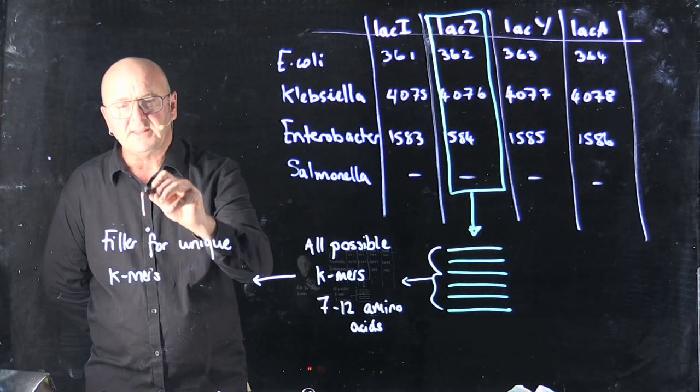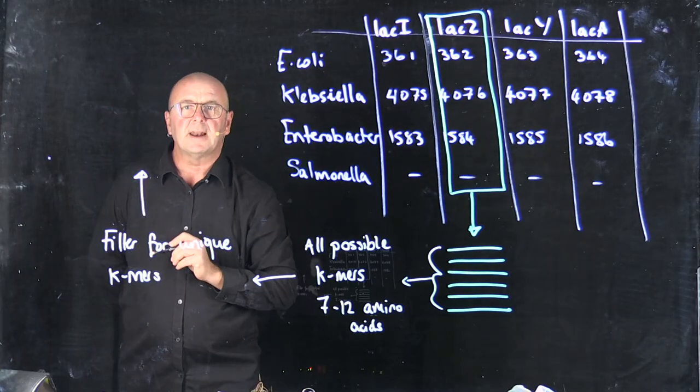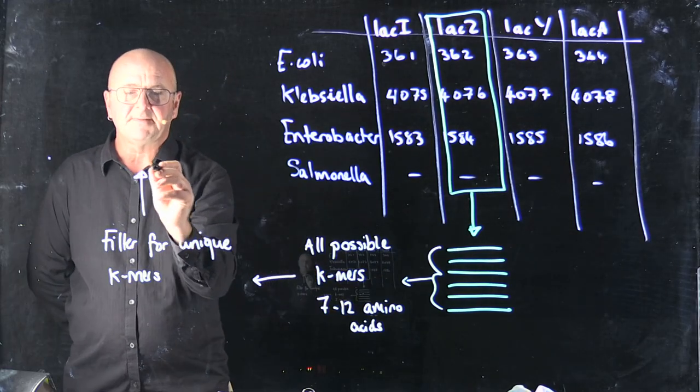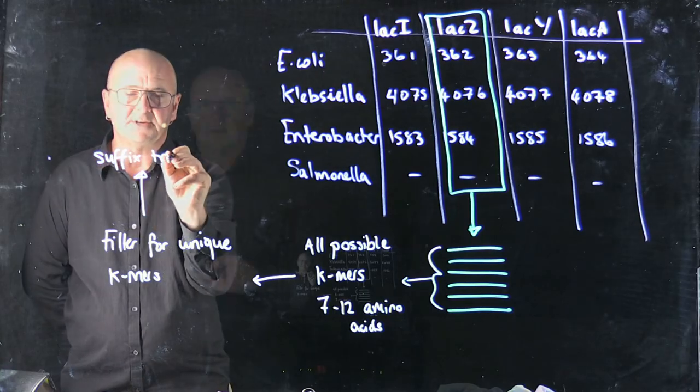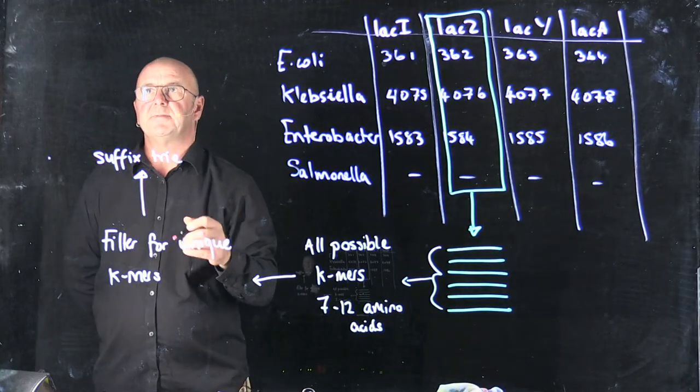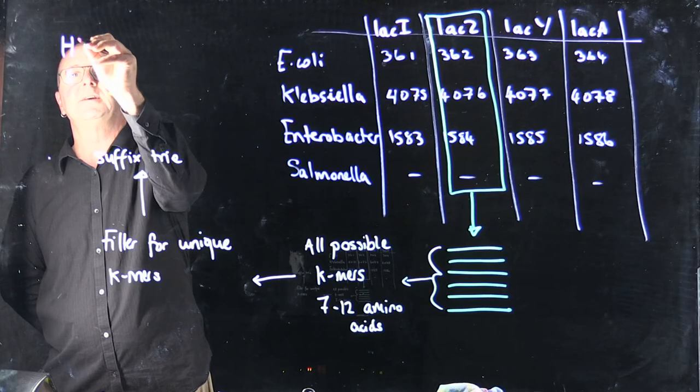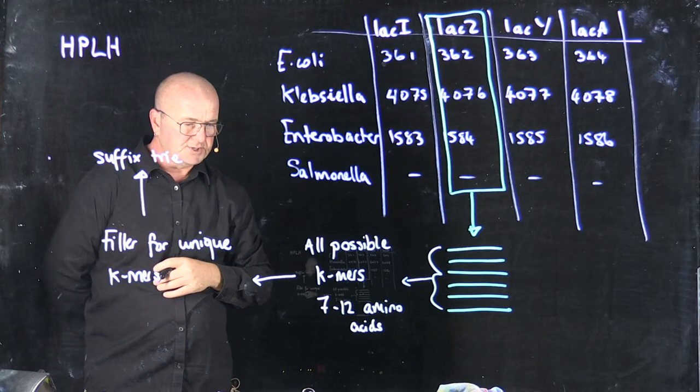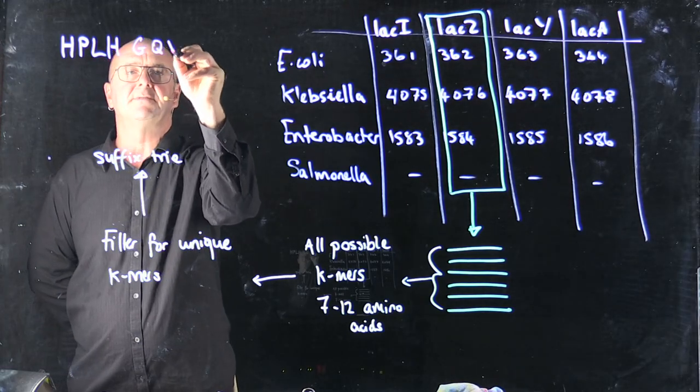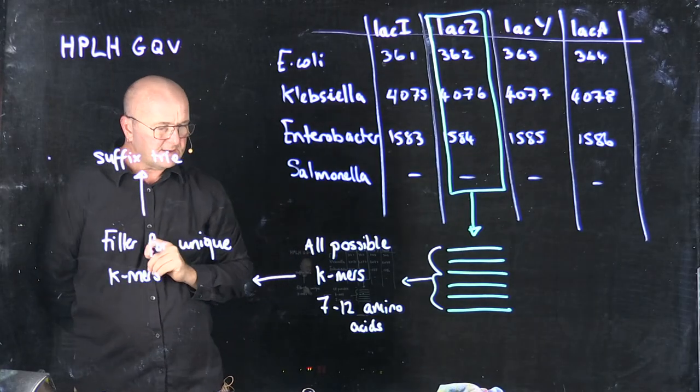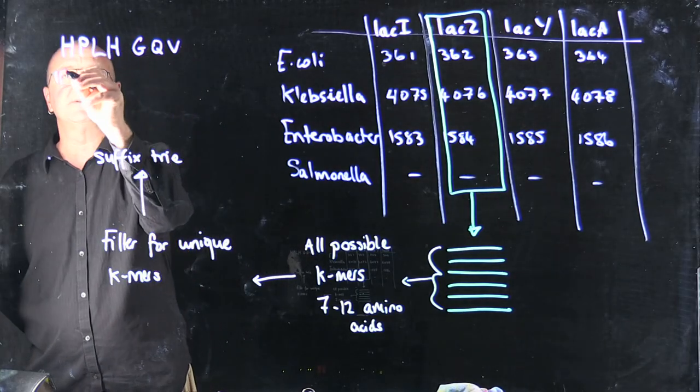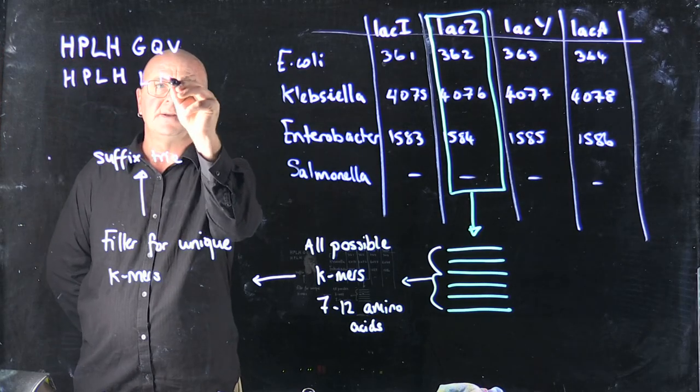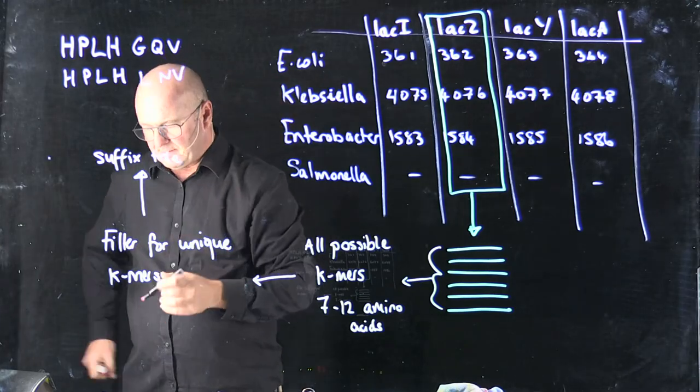And once we've done that, we can build a data structure that allows really efficient searching of these amino acid strings. And for that, we're going to use a suffix tree. So let me give you an example. From beta-galactosidase, we may find the K-mer that has the sequence H-P-L-H-L-N-V. To build our suffix tree, we start with the first character, we start with the H,